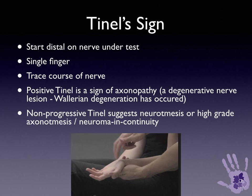The Tinel — or Tinel-Hoffmann sign — was described simultaneously by Tinel in France and Hoffmann in Germany. It is elicited by starting distally on the nerve under test and tapping lightly along its course with a single finger. A positive Tinel is a sign of axonopathy or a degenerative nerve lesion, elicited at the point of nerve injury acutely. If the nerve is in continuity, the Tinel can progressively be found more distally, and the distance between the two Tinels represents the length of the axonal regenerating front, giving information about injury complexity. A non-progressive Tinel suggests the nerve is either torn — a neurotmesis injury — or a high-grade axonal injury with formation of a neuroma in continuity.